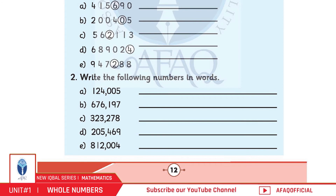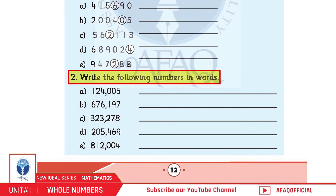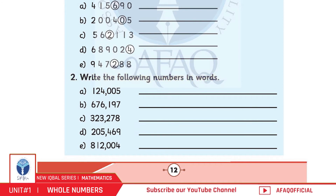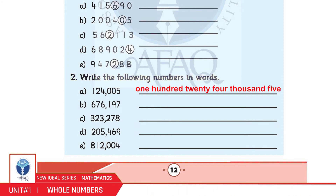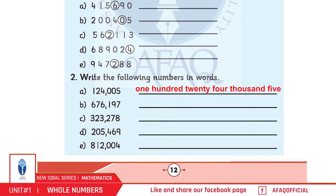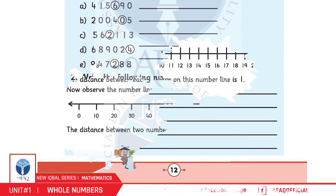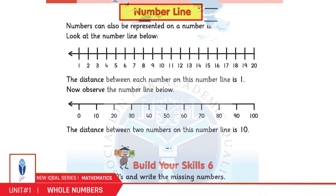Question 2: Write the following numbers in words. A: 124,005. इसی तरीके से अगले parts आपने खुद हल करने हैं।